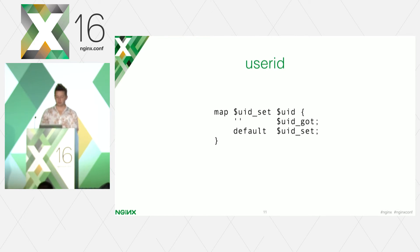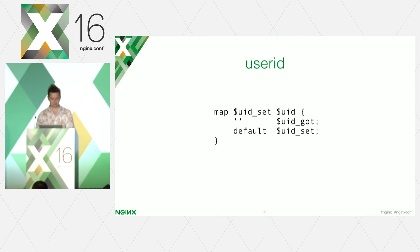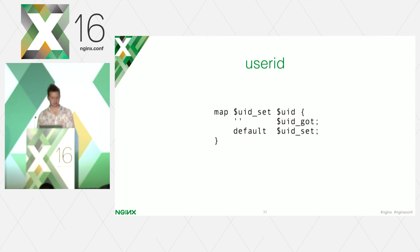Next we need a variable in our configuration for the visitor's ID. The variable we will use has to represent the state of two internal variables of the userid module: uid_got and uid_set. To create a new variable we will use the map directive in the nginx configuration. When a visitor comes to our application for the first time, the userid module sets a cookie with the UID — in this case we read the uid_set variable. If a visitor comes with an existing UID cookie, we can read the ID from uid_got. However, since the user can come with a wrong cookie, we have to read the uid_set variable first.